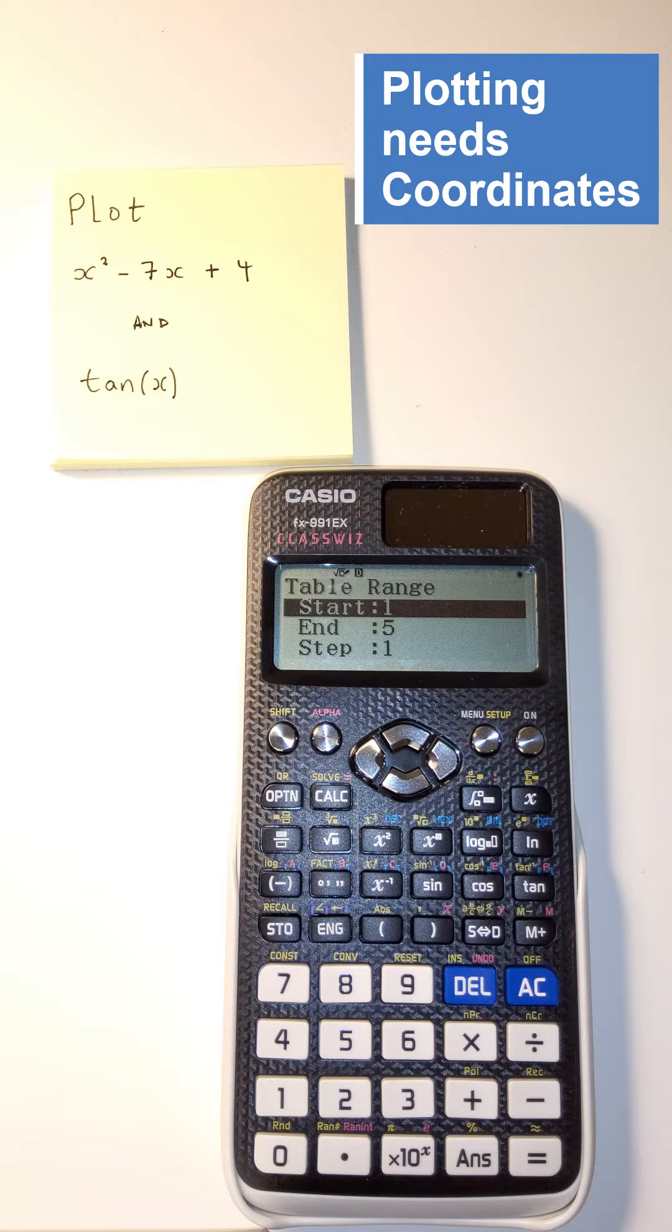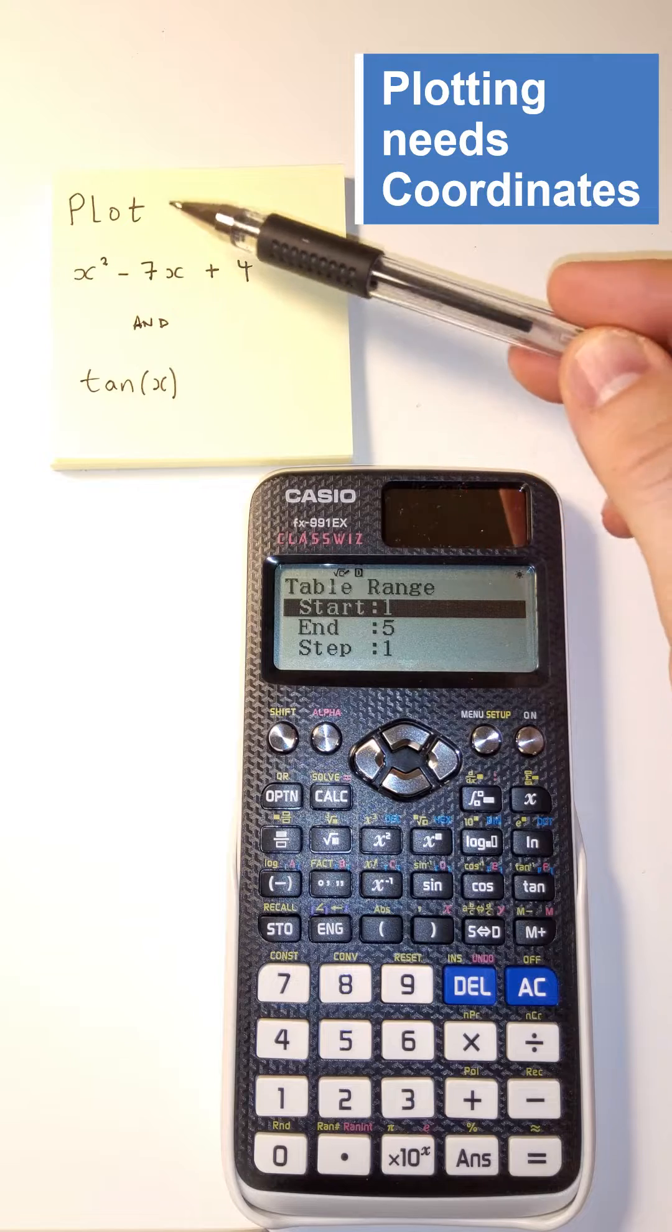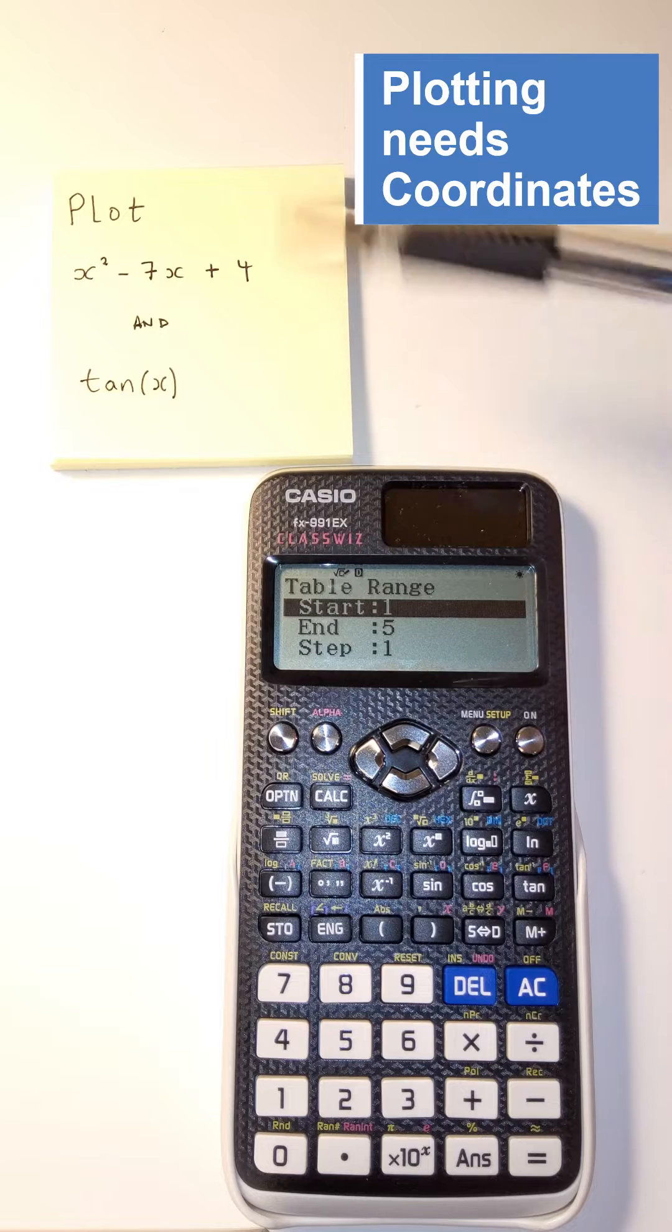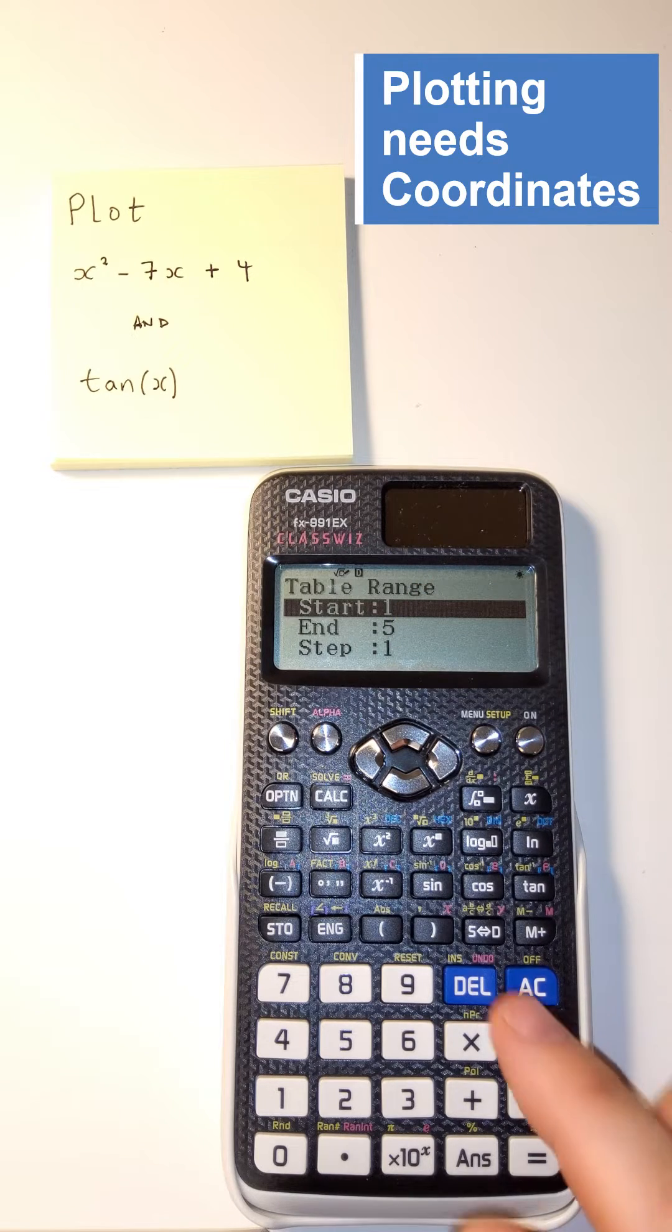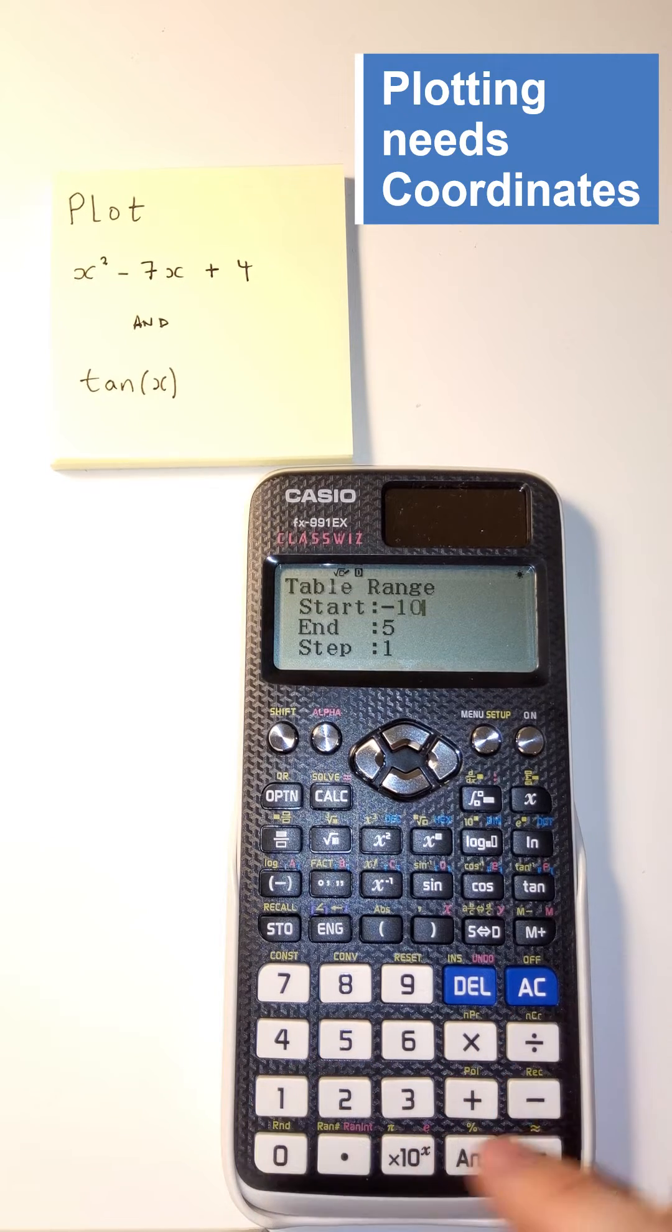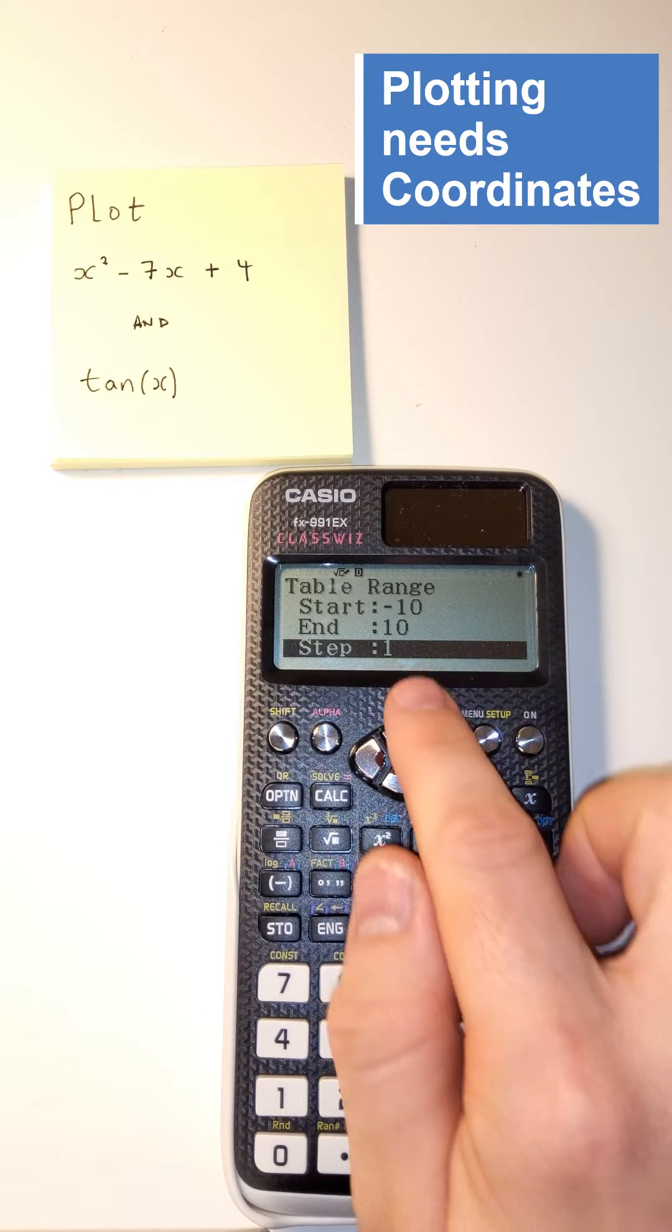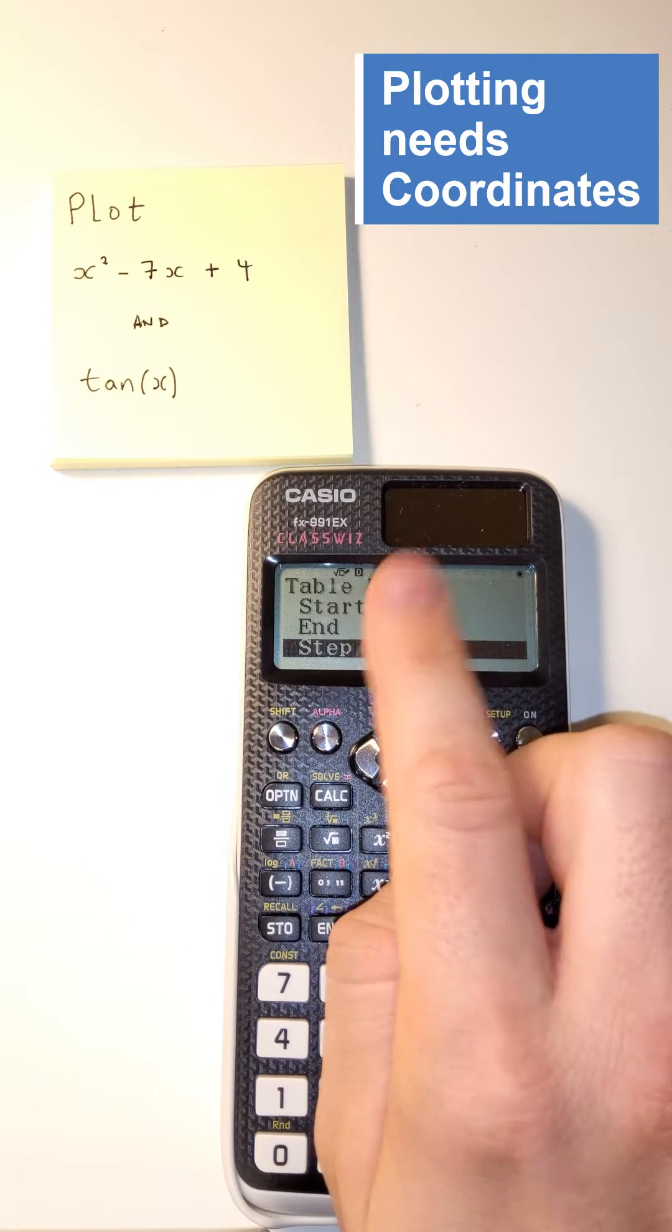It's going to ask us for a start range and a starting point in a range. Looking at the function, it's a quadratic, they typically go around the axes, and we can get enough if we go probably with plus or minus five, but let's just do ten. So we're going to start at negative ten and we're going to go up to ten in steps of one.